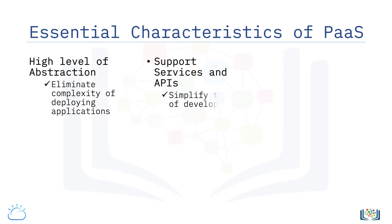PaaS clouds provide services and APIs that help simplify the job of developers in delivering elastically scalable and highly available cloud applications. These services typically include a variety of capabilities such as APIs for distributed caching, queuing, and messaging, file and data storage, workload management, user identity, and analytics, thus eliminating the need to integrate disparate components.